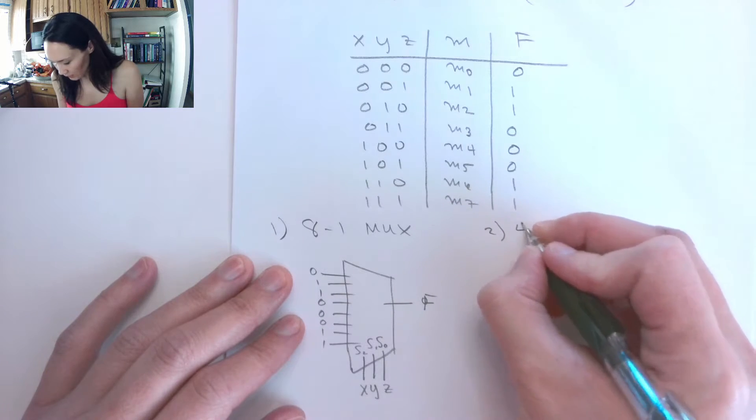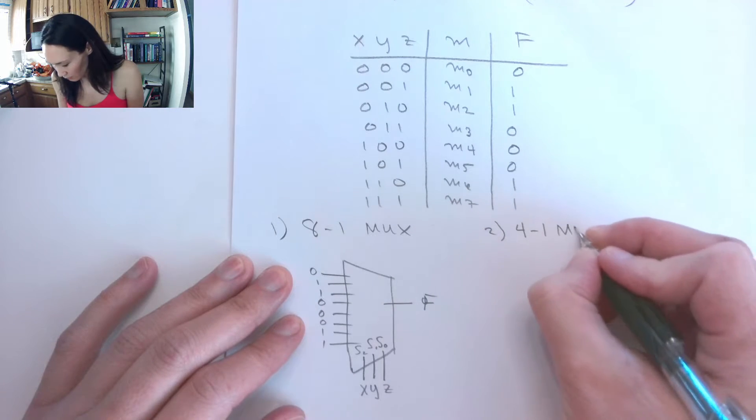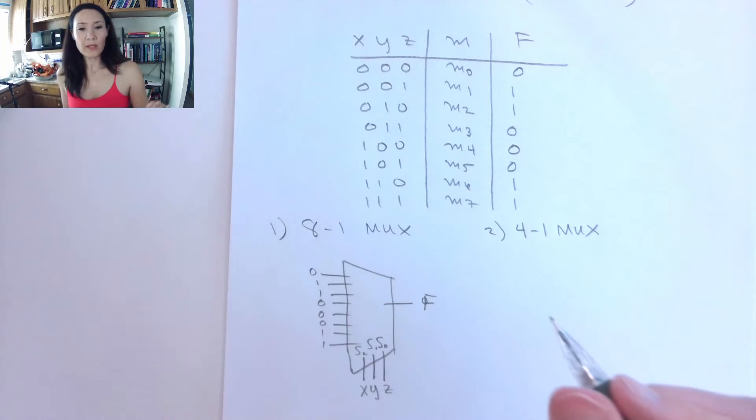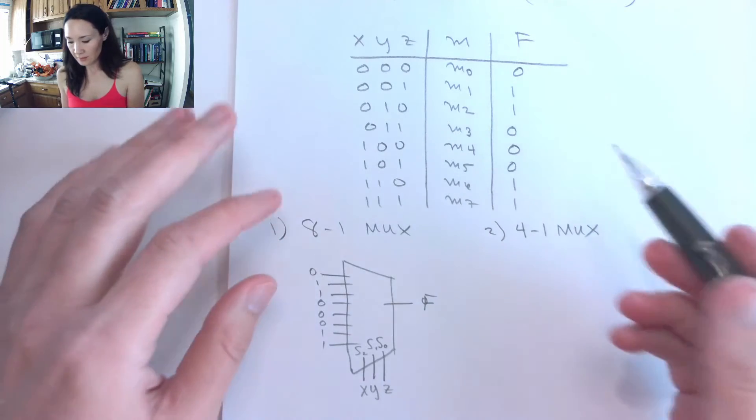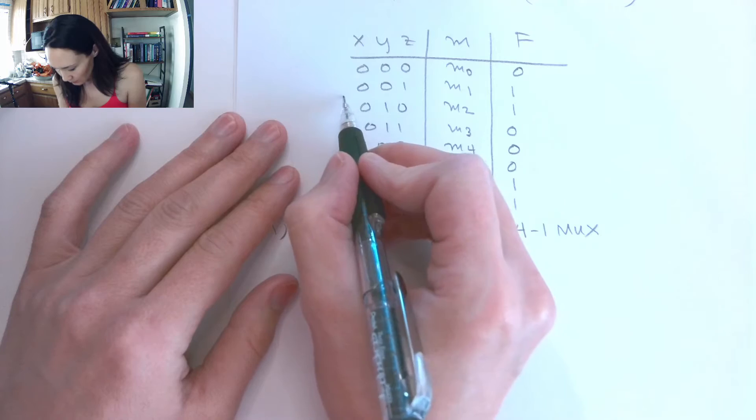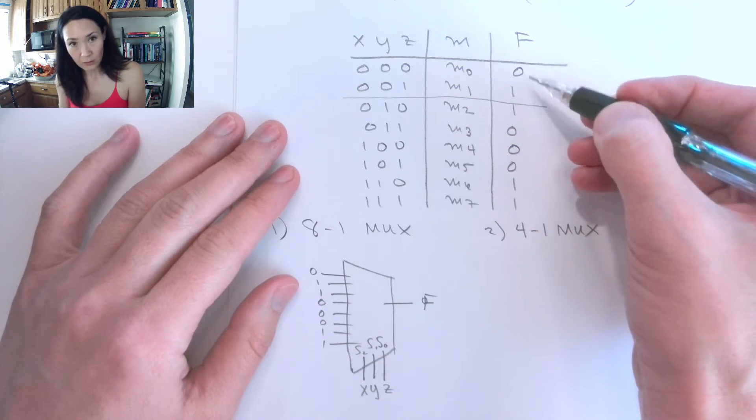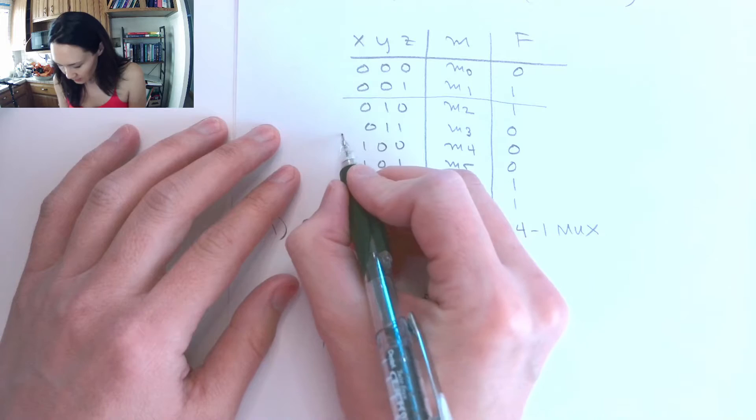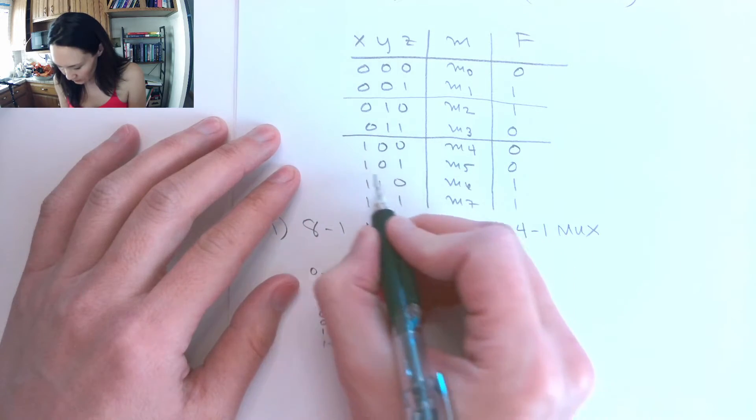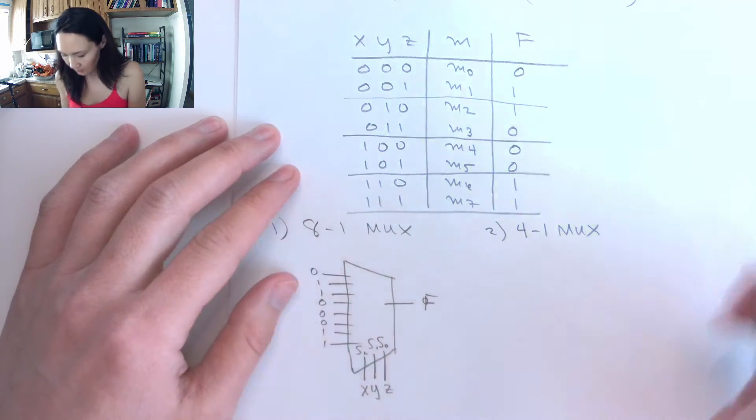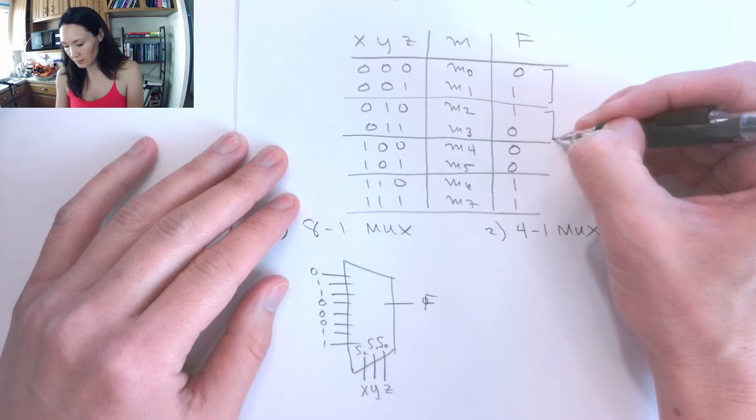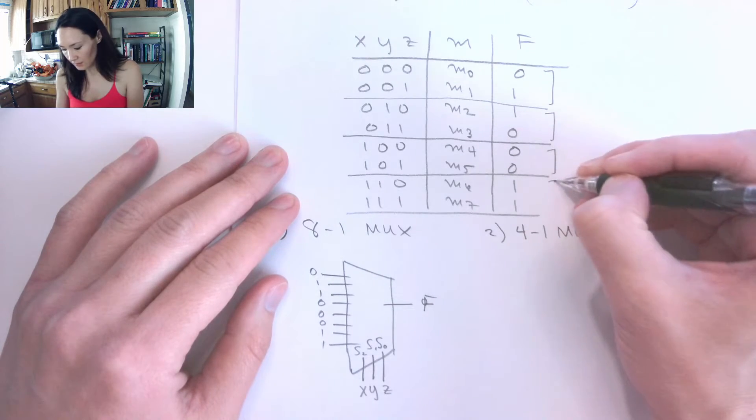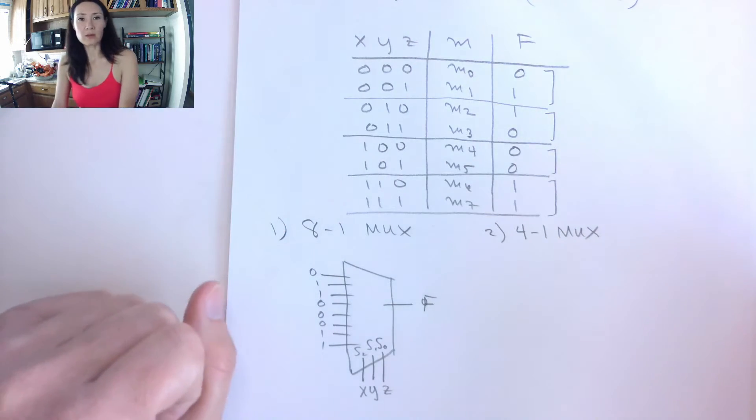Alright, so let me show you how we do the same thing with a 4 to 1 multiplexer. The way you do this is the first step is, again, we want to make this truth table. Now, the second step is we are going to split this truth table into groups of 2. So we have 2 bits here. So every 2 rows, I'm just going to split this up. Okay, so now what we do is we have this is a case, this is a case, this is a case, and this is a case.